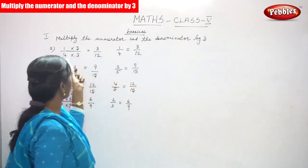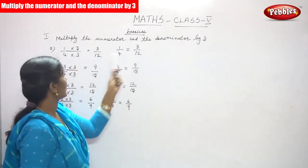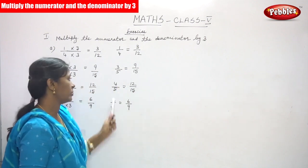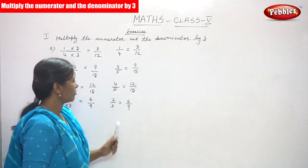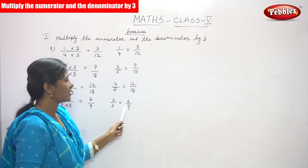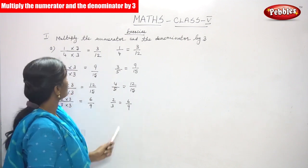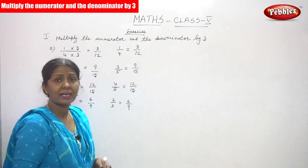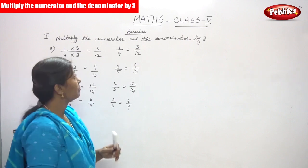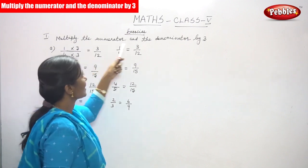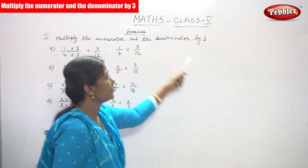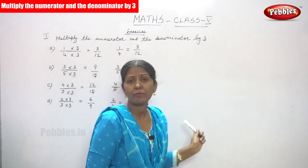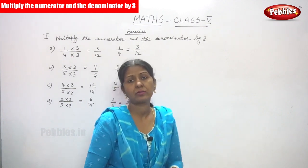So, clearly: 1 by 4 is equal to 3 by 12, 3 by 5 is equal to 9 by 15, 4 by 5 is equal to 12 by 15, and 2 by 3 is equal to 6 by 9. This is what we have to do — we have to make the equivalent fraction by multiplying the numerator and the denominator by 3. We have completed this first subdivision.